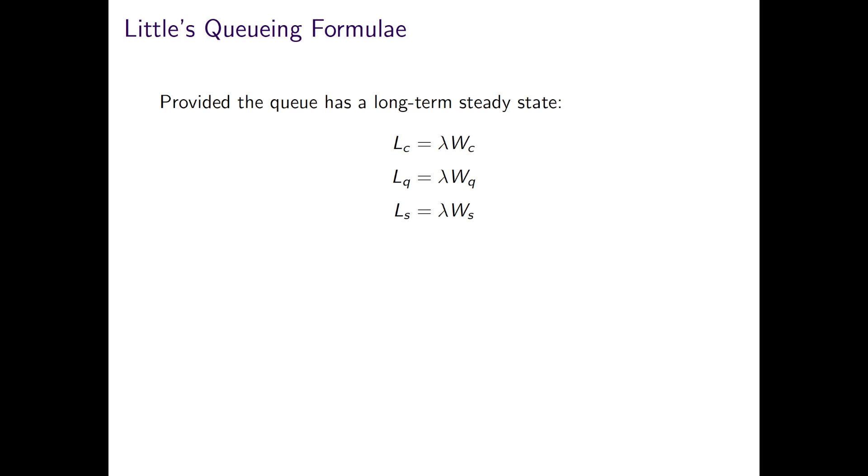And although it looks intuitively reasonable, it is actually quite a remarkable result. As the relationship is not influenced by the arrival process distribution, the service distribution, the service order or in fact practically anything else.